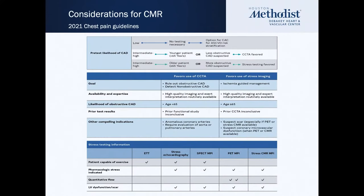In terms of considerations, there is a focus on which modality fits best for what you're trying to look for. The guidelines target testing towards specific patient groups. Younger patients with a lower likelihood of coronary disease or those where you want to determine if atherosclerotic disease is present may be better served with coronary CT, whereas intermediate to high-risk patients, older patients, or those with known obstructive disease may be better served with stress testing or functional testing.